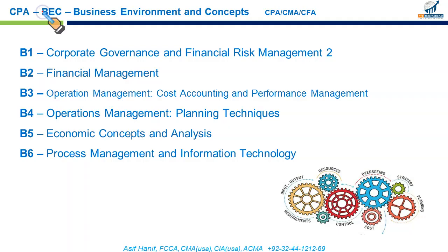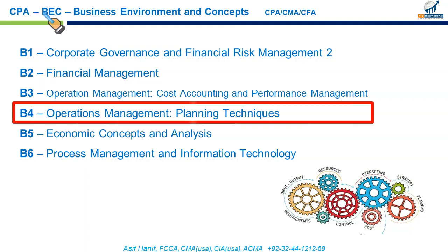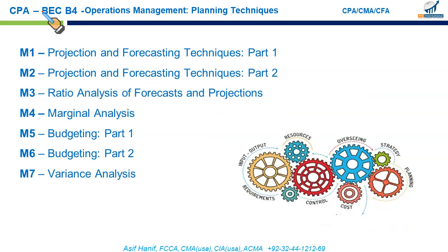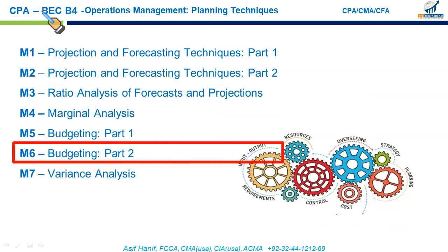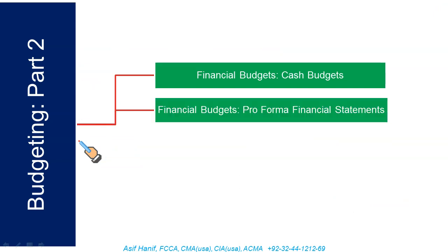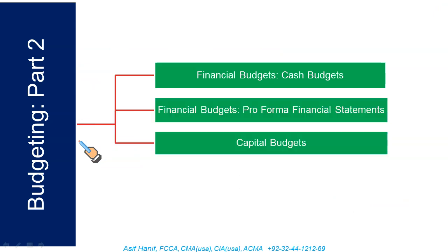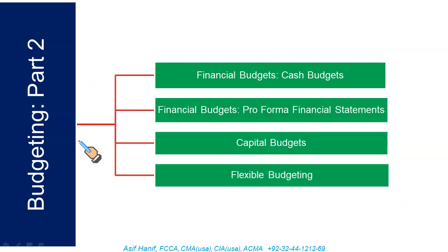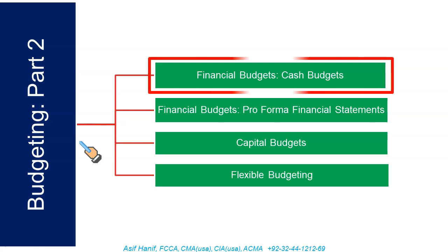Our next module within B4, in fact the second last one, is Budgeting Part 2. In this module we will be covering financial budgets, cash budgets, proforma financial statements, capital budgets, and finally flexible budgeting. Let us first do cash budgets.